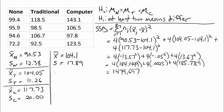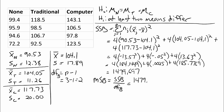The degrees of freedom between is the number of groups minus one. In this case, that's 3 minus 1, which equals 2, so I have two degrees of freedom between. To get the mean squares between, I divide the sum of squares between by the degrees of freedom between: 1,479.697 divided by 2, which equals 739.8485.